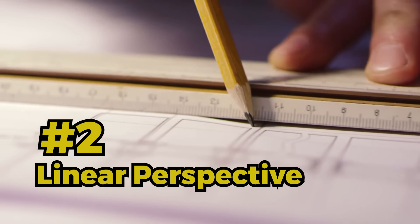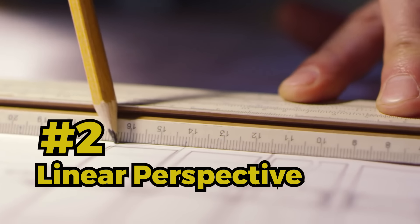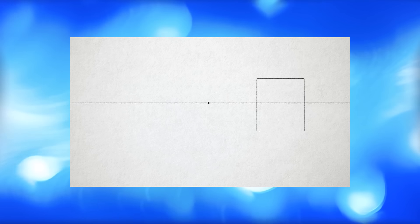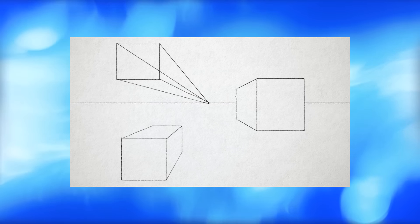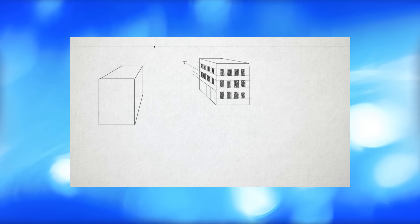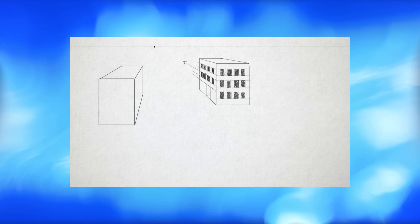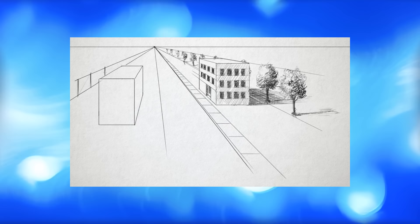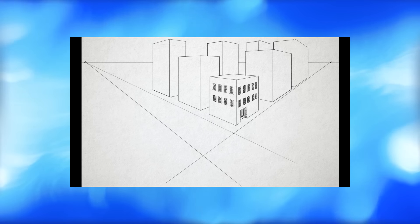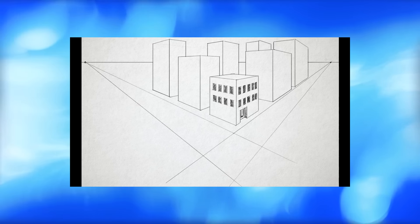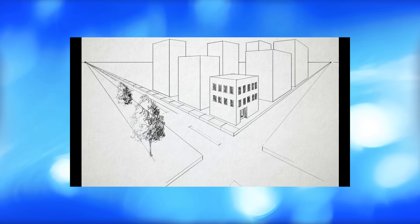Number two on our list is linear perspective. Linear perspective is a method using lines and a vanishing point or vanishing points to create the illusion of space on a two-dimensional surface. There are several different forms of linear perspective — there's one point perspective, as we see here, two point perspective, and three point perspective. What makes linear perspective easy is that it's a structured approach to drawing, great for drawing from your imagination and creating scenes with the illusion of space.